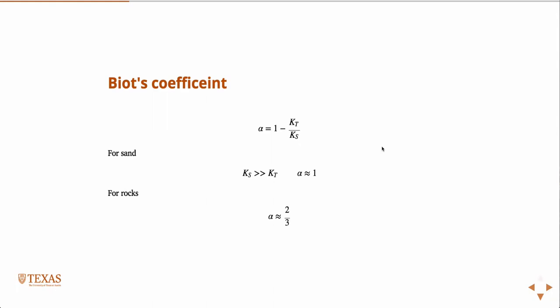And so approximately, in that case, this term would be zero. You'd have a very small number divided by a very large number, giving you something close to zero, and therefore alpha is approximately one, and then you get back Terzaghi's effective stress via that model.